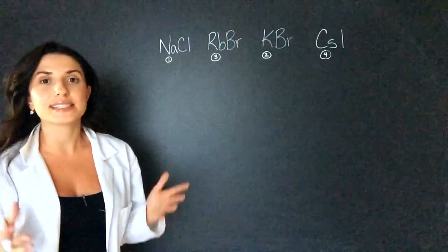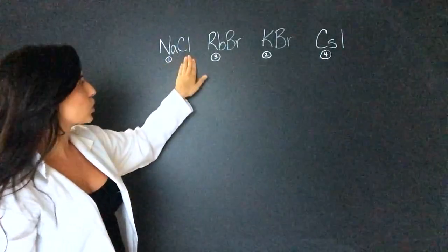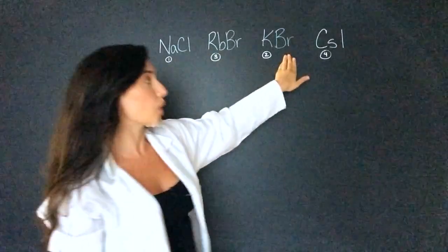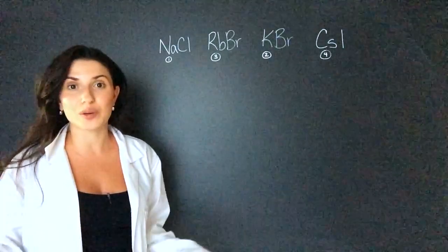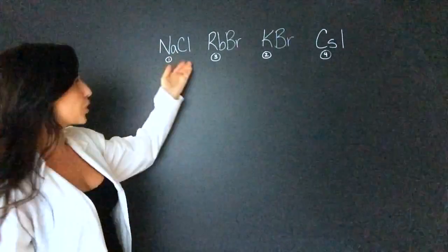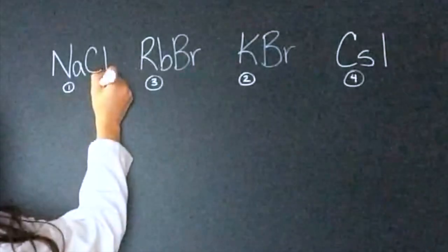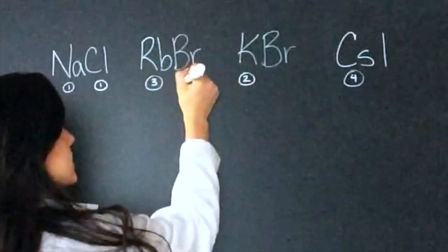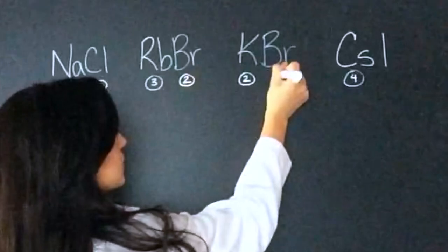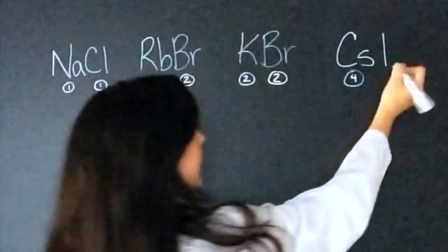Then I look at the second one. I have chlorine, bromine, bromine and iodine. These are all in the same group again so I can just put them from lowest to highest. Chlorine is the smallest, one. Bromine is the second smallest, so two, two. And iodine is the biggest.